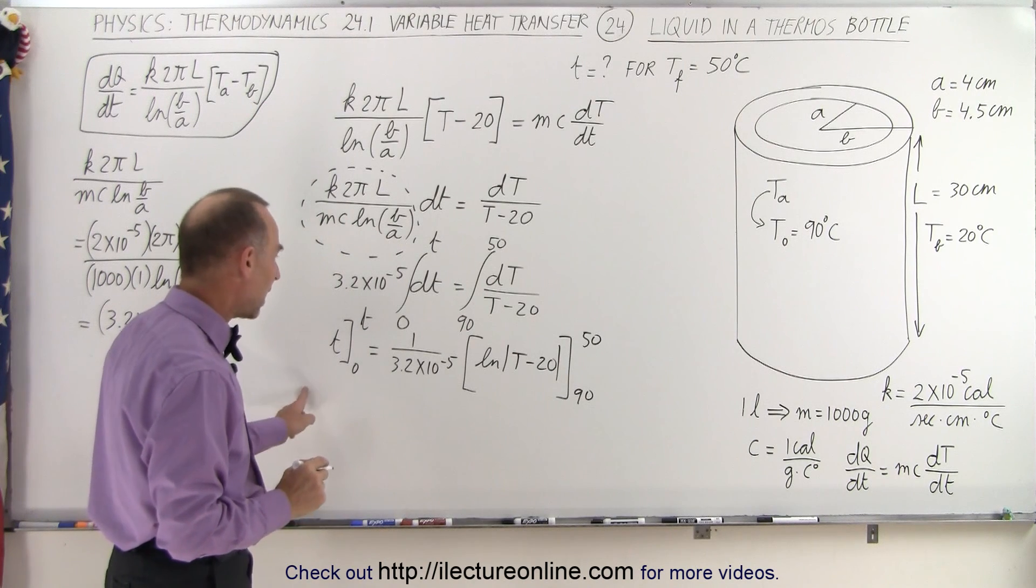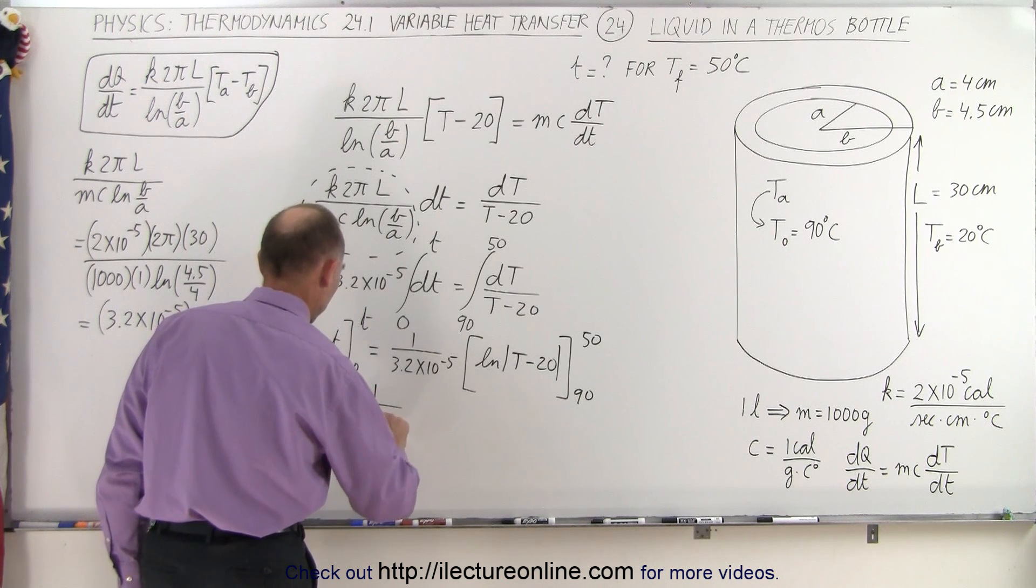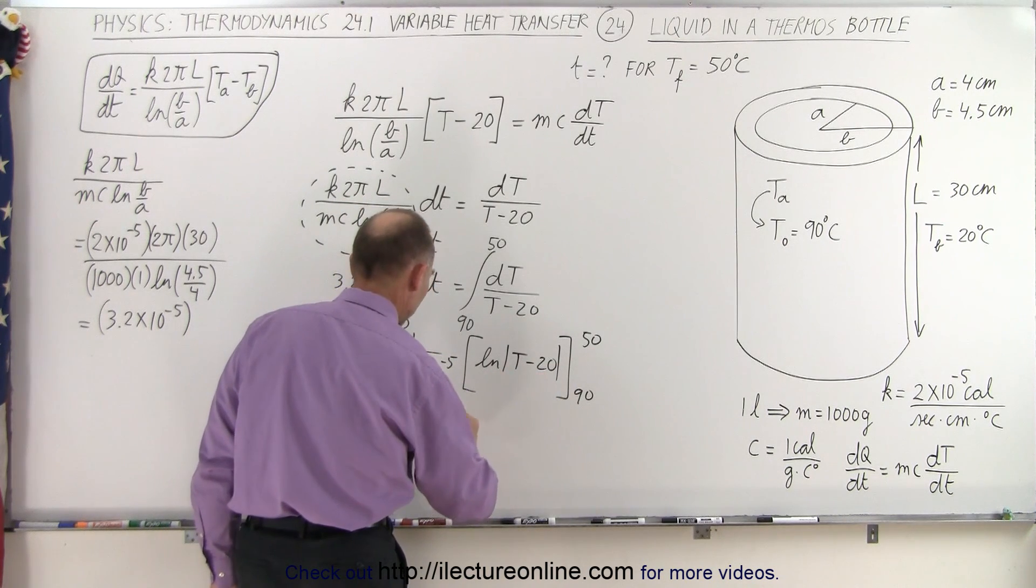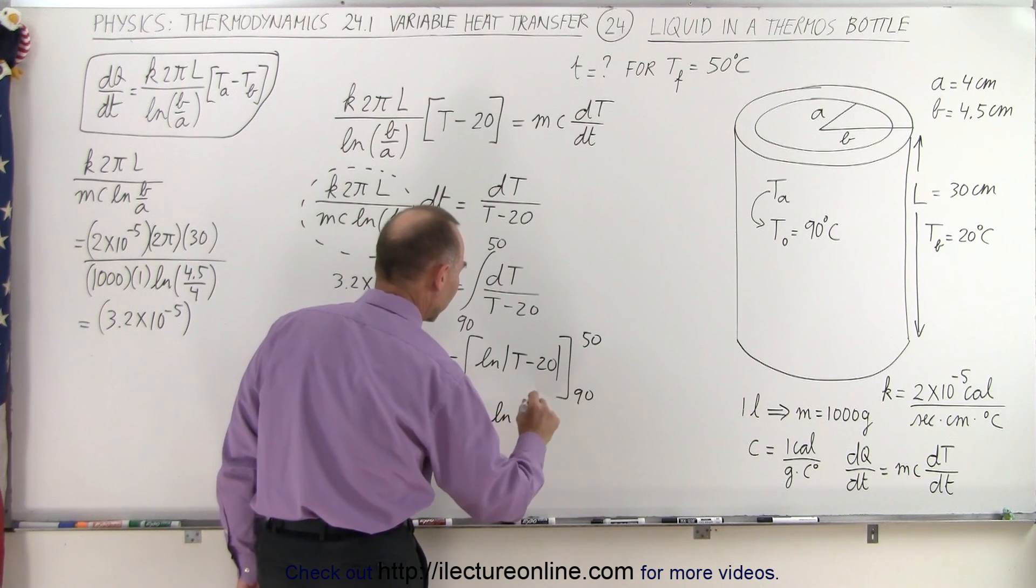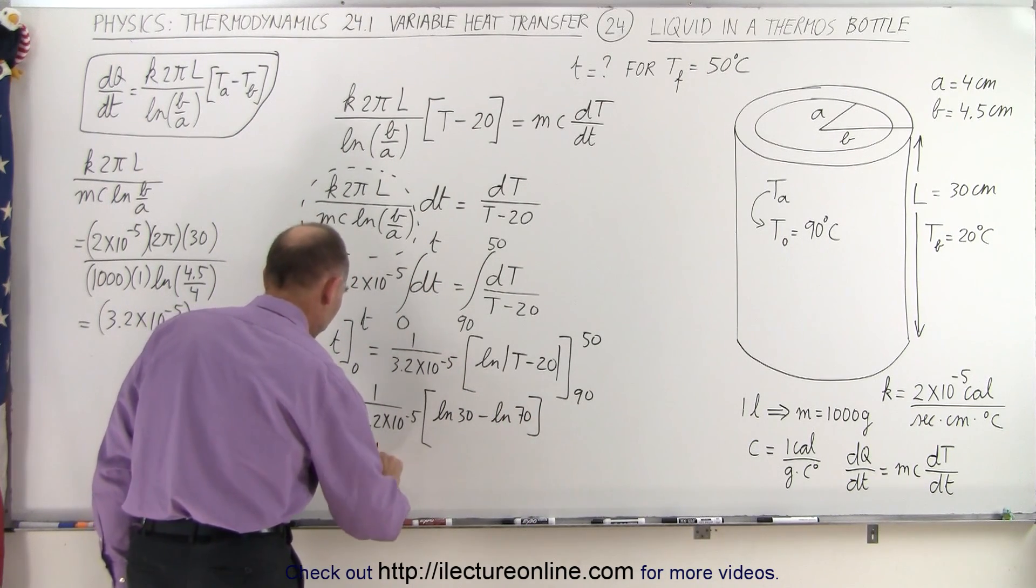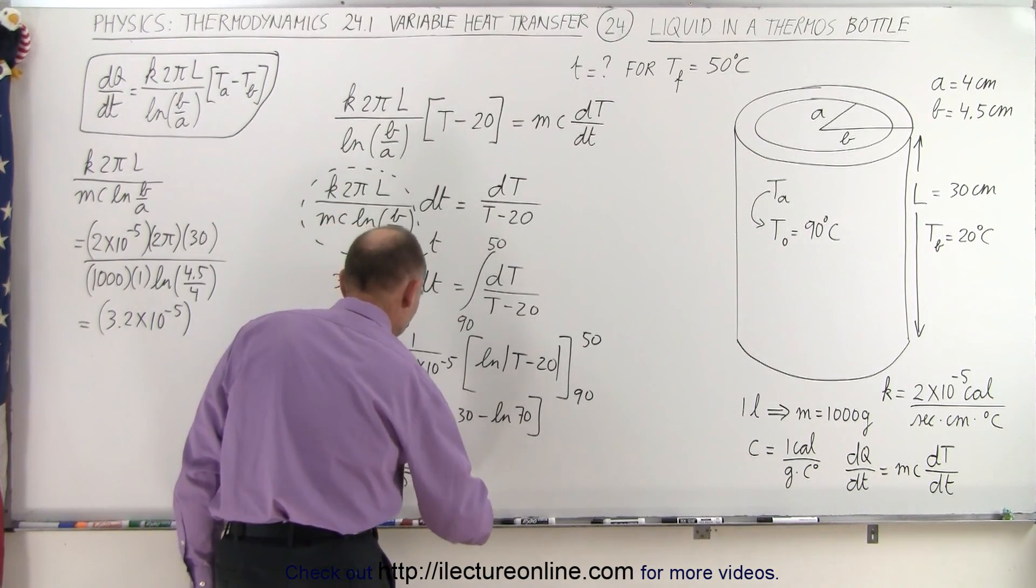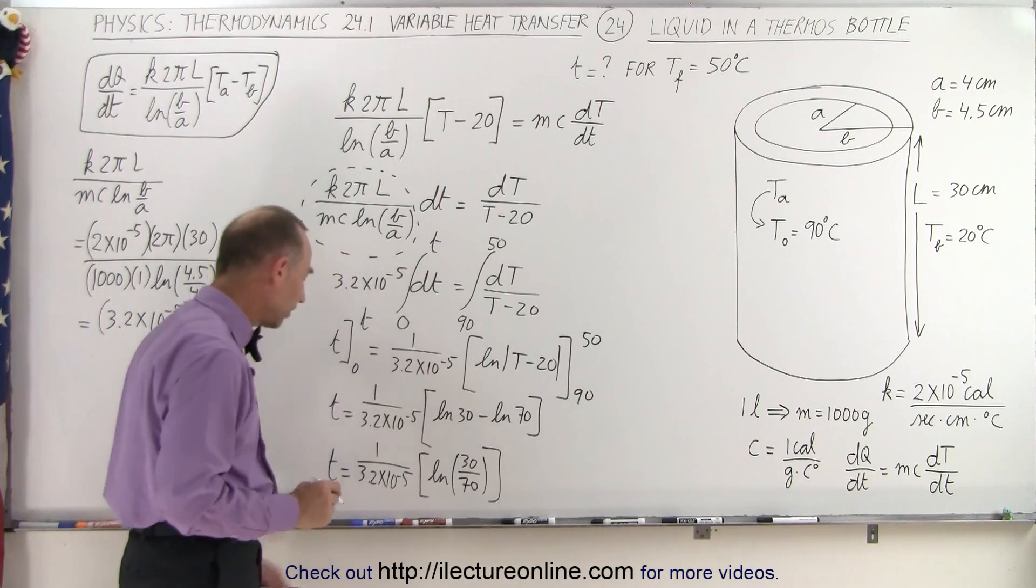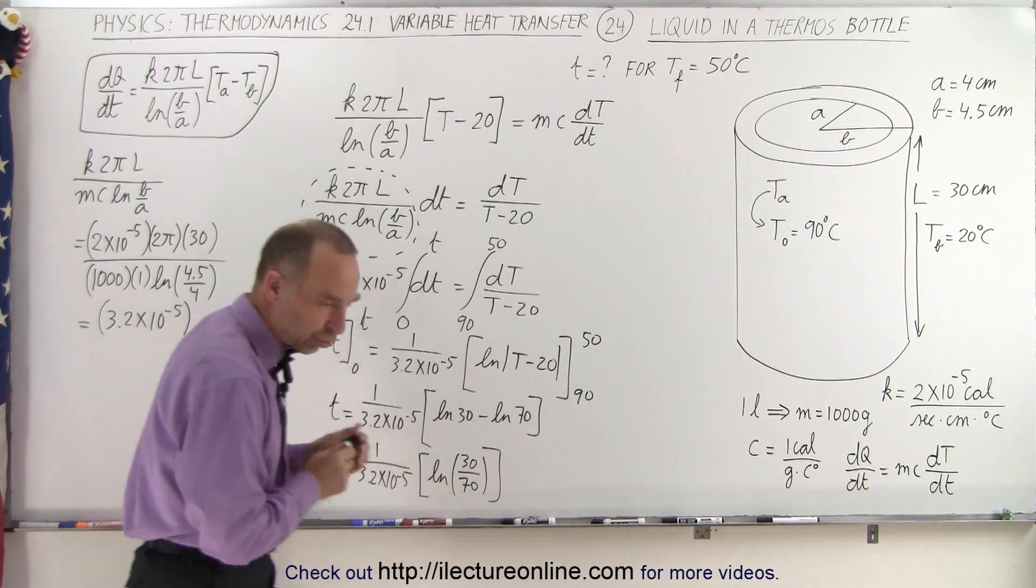So now this will simply become time. So time is equal to 1 over 3.2 times 10 to the minus 5 times, and then if we plug in the upper limit, we get 50 minus 20, which is 30. That's the natural log of 30 minus, when we plug in the lower limit, that's 90 minus 20, which is the natural log of 70. And so the time is going to be equal to 1 over 3.2 times 10 to the minus 5 times the natural log of the ratio of 30 divided by 70. Now, I know that this will definitely give us a negative number, but we're looking for the absolute value, the time that it takes to go to that temperature change.